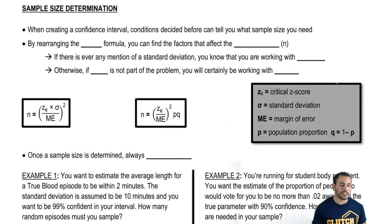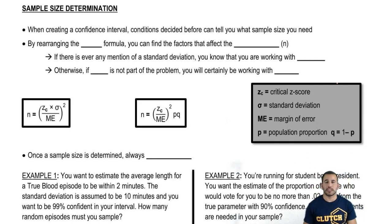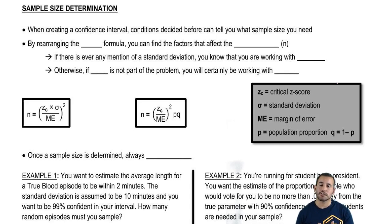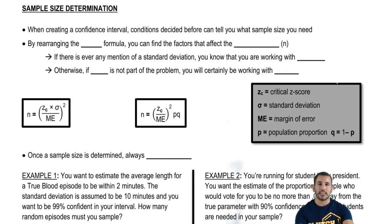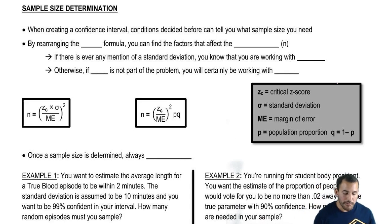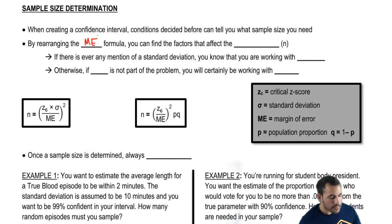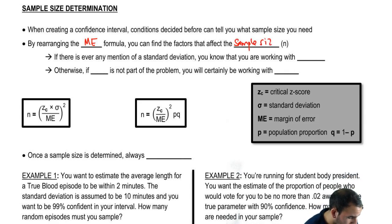When creating a confidence interval, conditions decided before data collection can tell you what sample size you're going to need. For example, you decide how far above and below you want your interval to be, and the confidence level you want. Once you have those, you can figure out how many samples you need to create that confidence interval with that level of confidence. By rearranging the margin of error formula, you can find the factors that affect n.